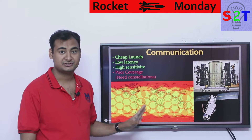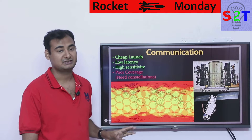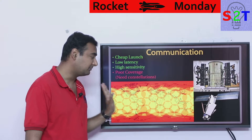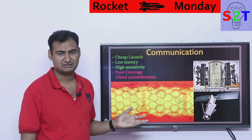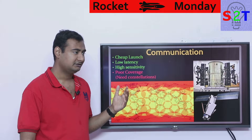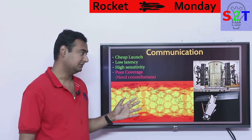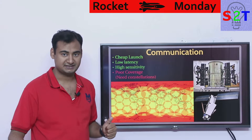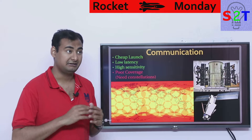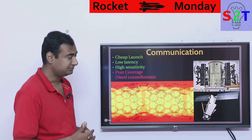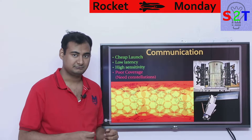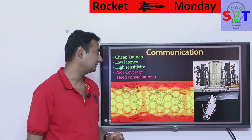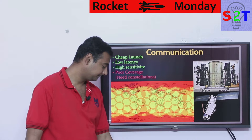This is what Elon Musk wants to bypass using the Starlink project. Iridium barely has a thousand satellites, and Starlink wants to go to 4,000 satellites. That way you will have enough coverage everywhere that you can use broadband via satellite communication link.